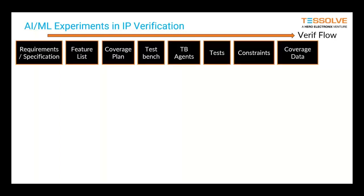With the flow going across the top, we start with requirements specification. At TESOLV the first thing we'd want to do is feature extraction and come up with a list of the main features we're going to try to verify. Based on those features we can generate a coverage plan, and once we have that we can build our test bench, build agents, generate tests or sequences, add constraints, and generate coverage data.